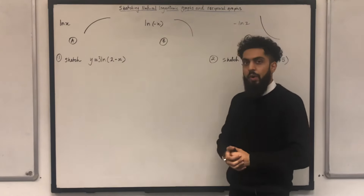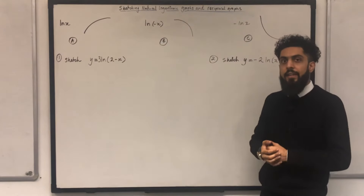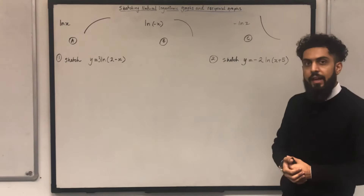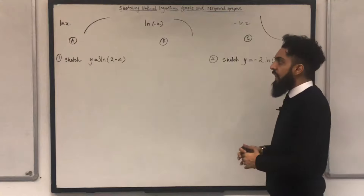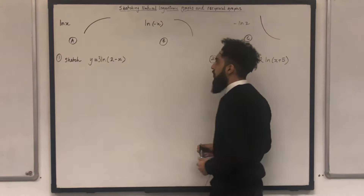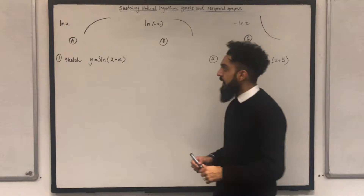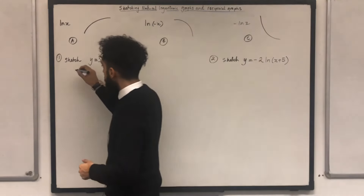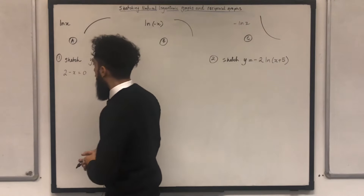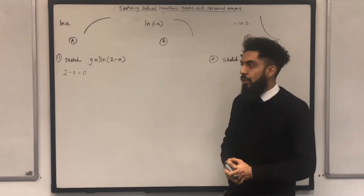The very first step is to work out the equation of the asymptote. To find it, all I need to do is set whatever is inside the bracket equal to 0. So 2 - x = 0, and solving for x gives x = 2.